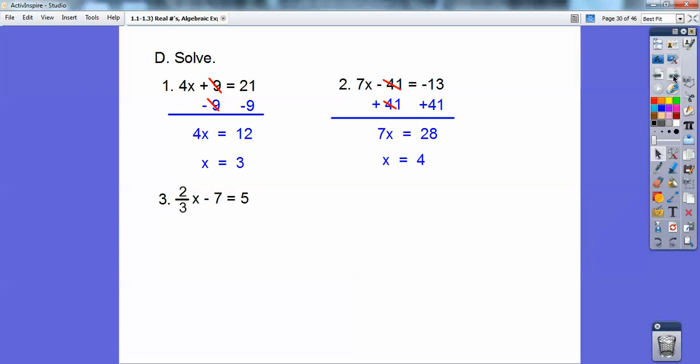This one here, I would go ahead and add the 7 to both sides and get 2/3 x equals 12. And then now what I would do on this one is multiply by the inverse, the reciprocal of 2/3, which is 3/2. So I'll multiply both sides by 3/2. And then 2 goes into 6 three times. And then I'm left with 6 times 3, or 18. Over here, everything cancels. So x equals 18.